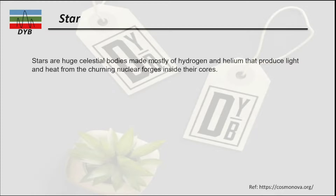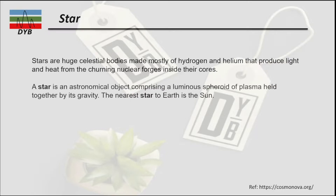Stars are huge celestial bodies made mostly of hydrogen and helium that produce light and heat from nuclear fusion reactions inside their cores. A star must have its own source of energy because of the internal processes happening in their cores or surfaces. A star is also an astronomical object comprising a luminous sphere of plasma held together by gravity. The nearest star to Earth is the Sun, which we receive light and energy from.